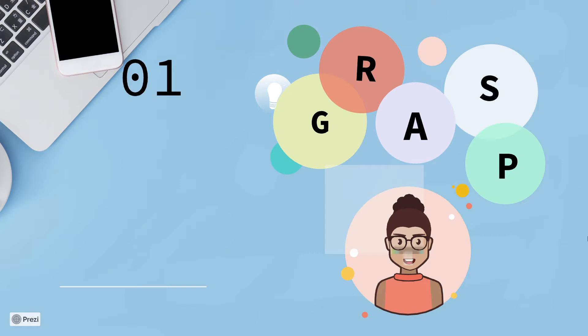Today we're gonna talk about GRASP, which is a set of nine fundamental principles in object design and responsibility assignment.